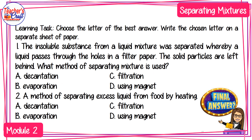Choose the letter of the best answer and write it on a separate sheet of paper. Number 1: An insoluble substance from a liquid mixture was separated whereby a liquid passes through the holes in a filter paper and the solid particles are left behind. What method of separating mixture is used? A) decantation, B) evaporation, C) filtration, or D) using magnet.